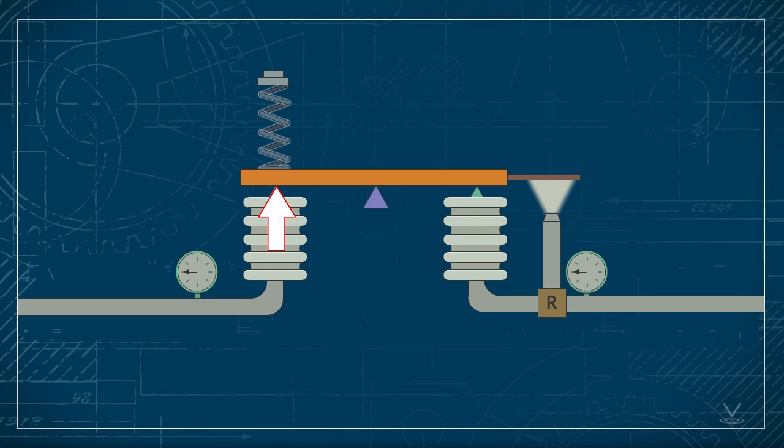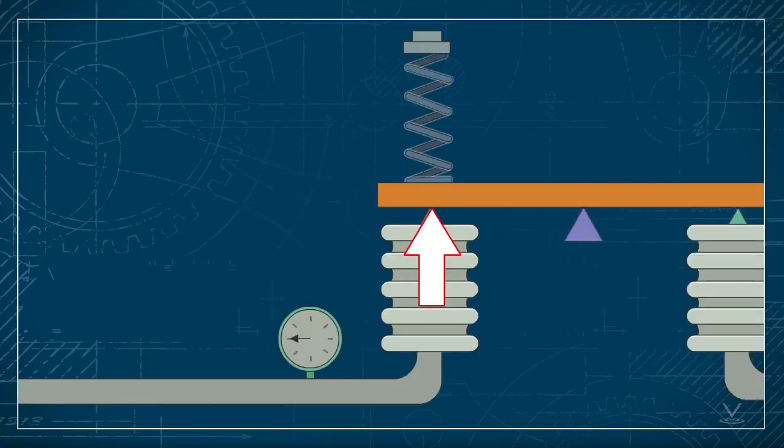The input bellows exerts a force on one end of the beam. The beam is pivoted at its center. As you remember, the second function of a controller is to compare the measured signal to setpoint.